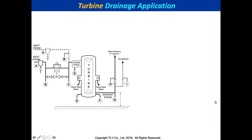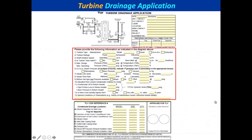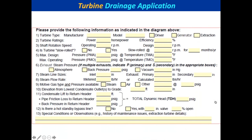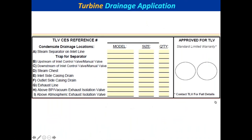For Turbine Drainage Applications — TDA forms — we have an input section covering system data, and then product selections: the separator, trap types, sizes, and quantities.